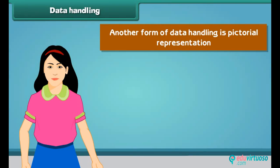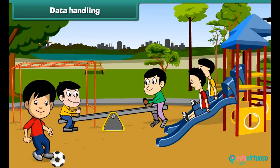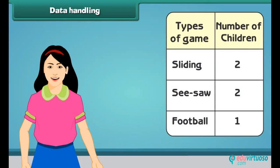Another form of data handling is pictorial representation. Let us learn about it. This is a garden with kids playing. Some of them are sliding, some of them are playing on a seesaw, while some of them are playing with a football. You can easily represent the number of children on the slide, seesaw, and playing football by using tally marks.